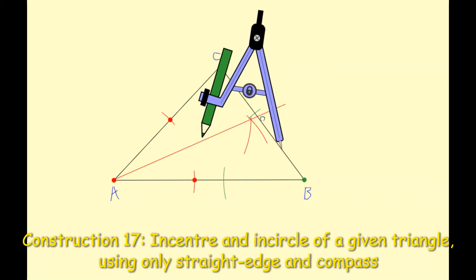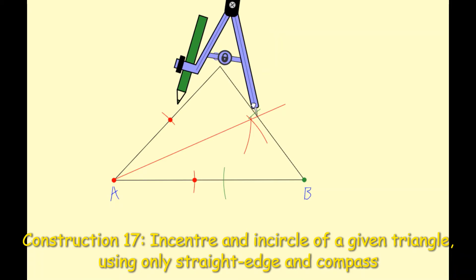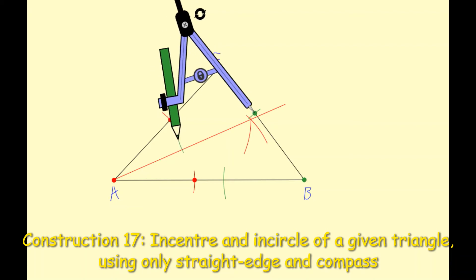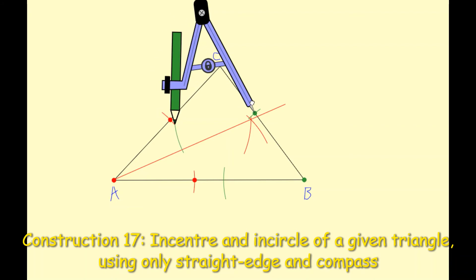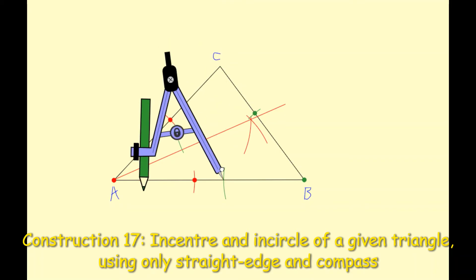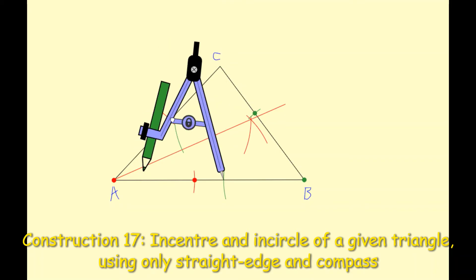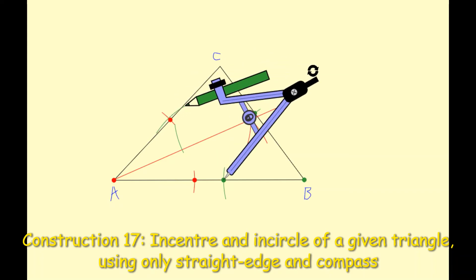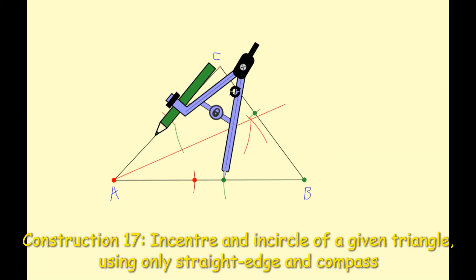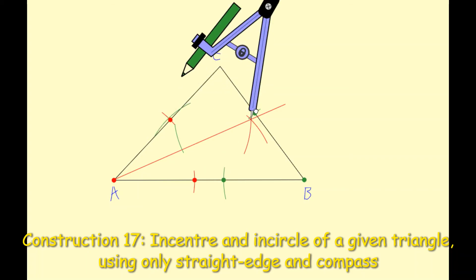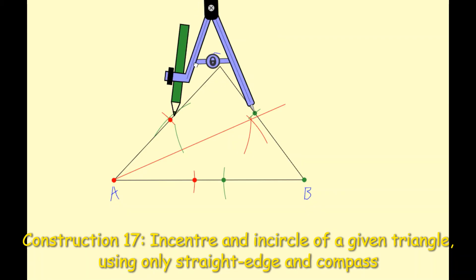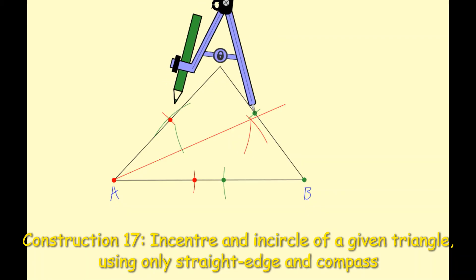I'm now going to move the nib of my compass to both of these green arcs. Once again, I'm going to construct two more arcs and these should intersect each other. So there's my first one. Moving my nib down to the line segment AB, it should intersect my other green arc. Let's see if it does. Okay, it hasn't there. So I just need to bring the nib of my compass back up and make sure that I extend my arc far enough. You can see here I just need to extend it ever so slightly.